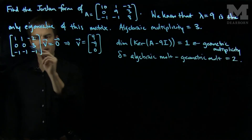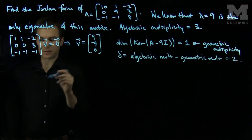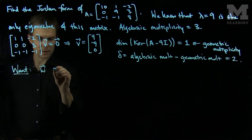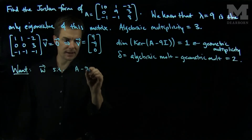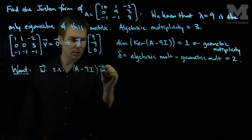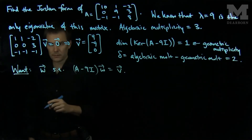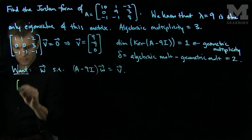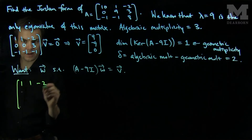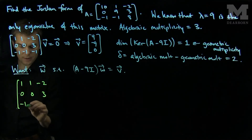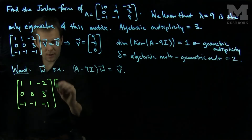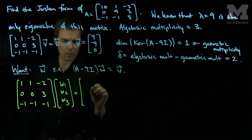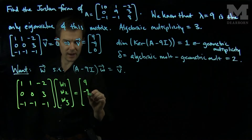So we wish to find a vector w such that A minus 9 times the identity applied to w gives us v. That equation will be: the matrix (1, 1, negative 2 / 0, 0, 3 / negative 1, negative 1, negative 1) applied to (w1, w2, w3) is equal to (9, negative 9, 0).